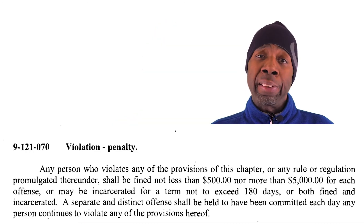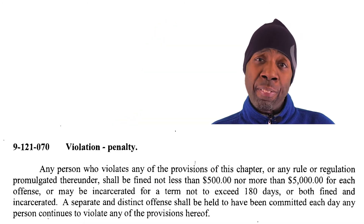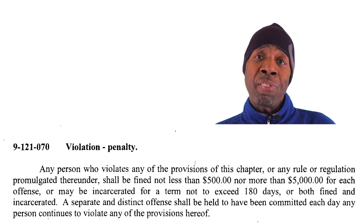It also says: notwithstanding the prohibitions set forth in this section, a person may operate a small unmanned aircraft in any location designated for such operation by the general superintendent and chief executive officer of the Chicago Park District. After numerous calls to the Chicago Park District, I've yet to find out where these designated areas are located within the Chicago Park District.